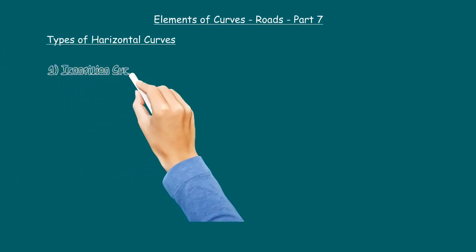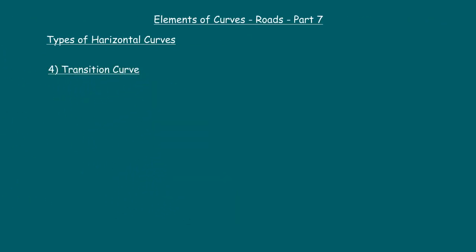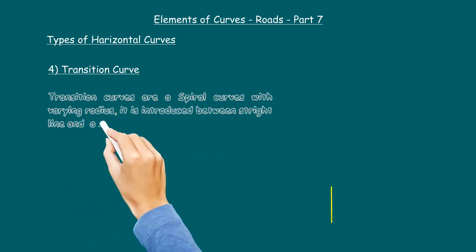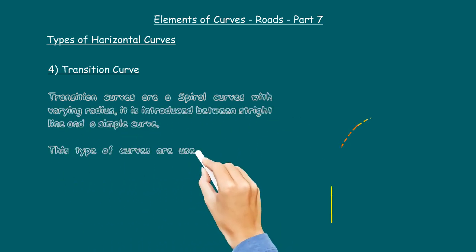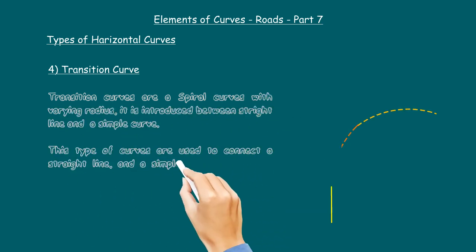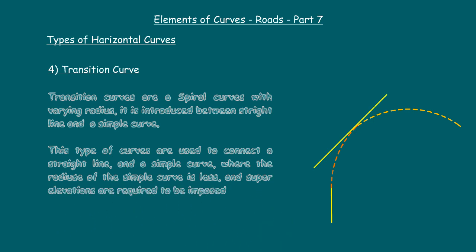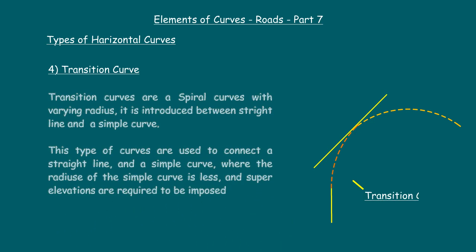Four: transition curves — transition curves are spiral curves with varying radius. They are introduced between a straight line and a simple curve. This type of curve is used to connect a straight line and a simple curve where the radius of the simple curve is small and super elevations are required to be imposed.